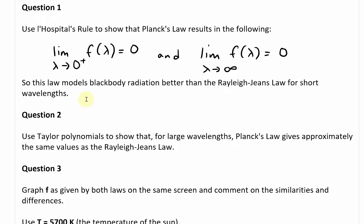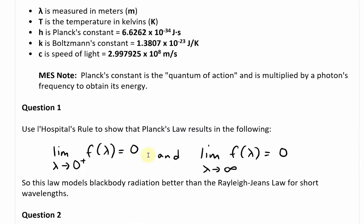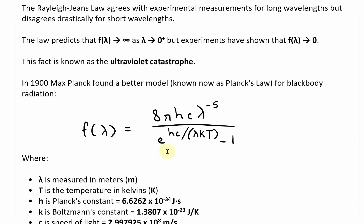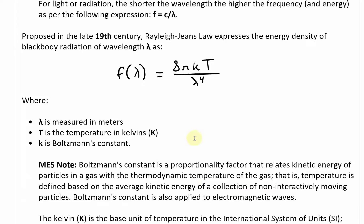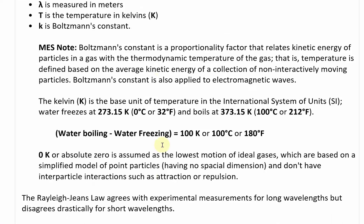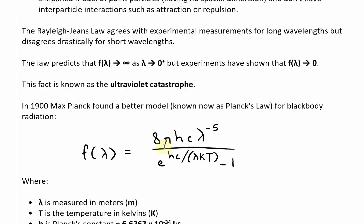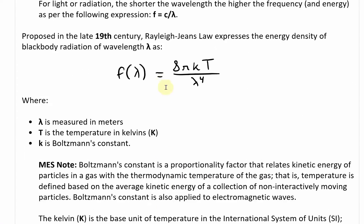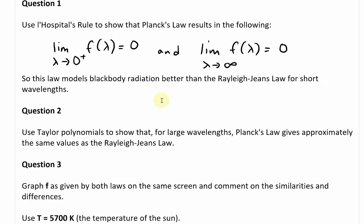Now let's look at question two. Question two says to use Taylor polynomials to show that for large wavelengths, Planck's law gives approximately the same values as the Rayleigh-Jeans law. We have Planck's law and Rayleigh-Jeans law, and we're going to show that they are approximately equal at large wavelengths.